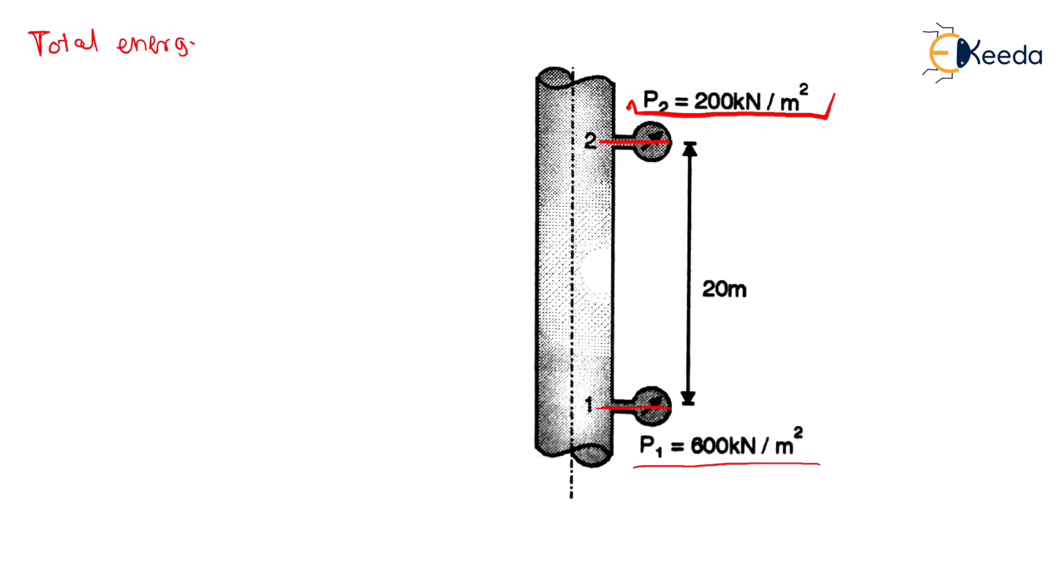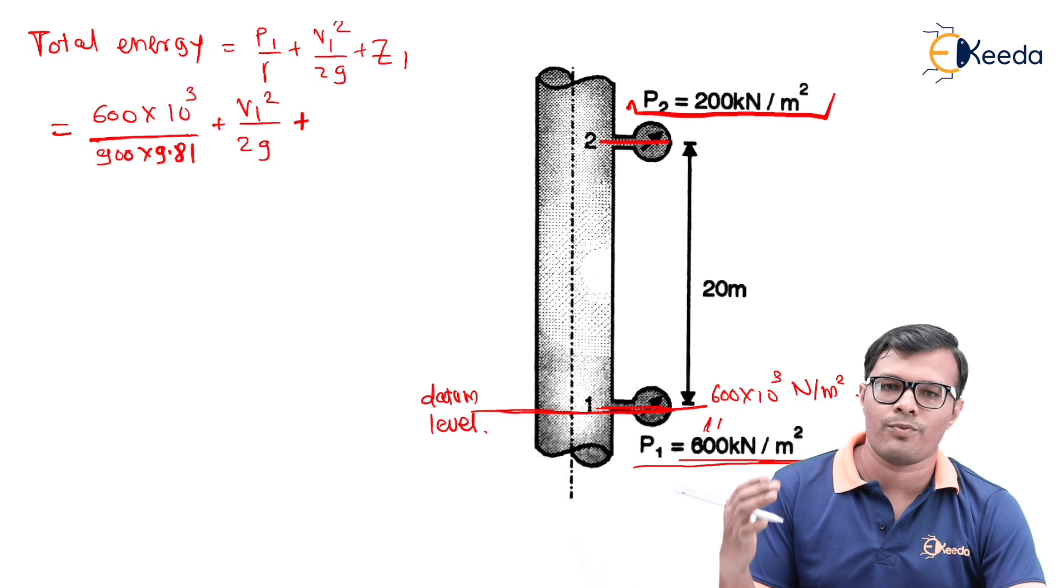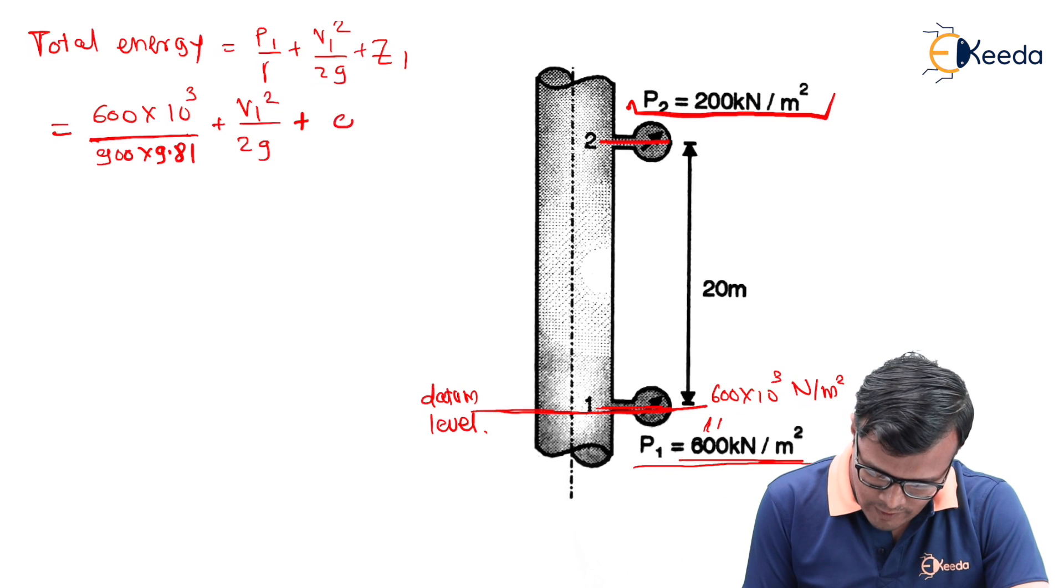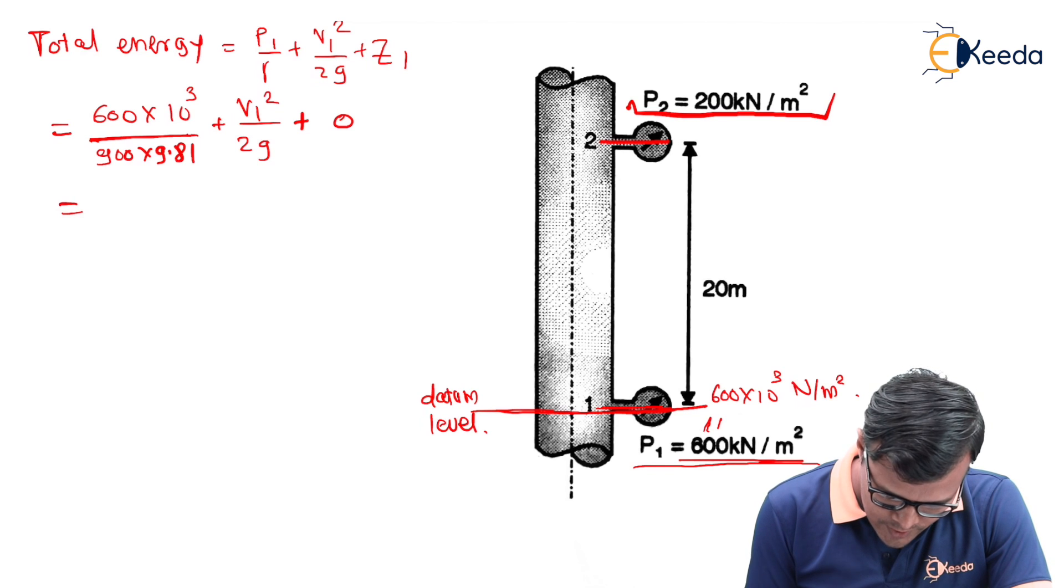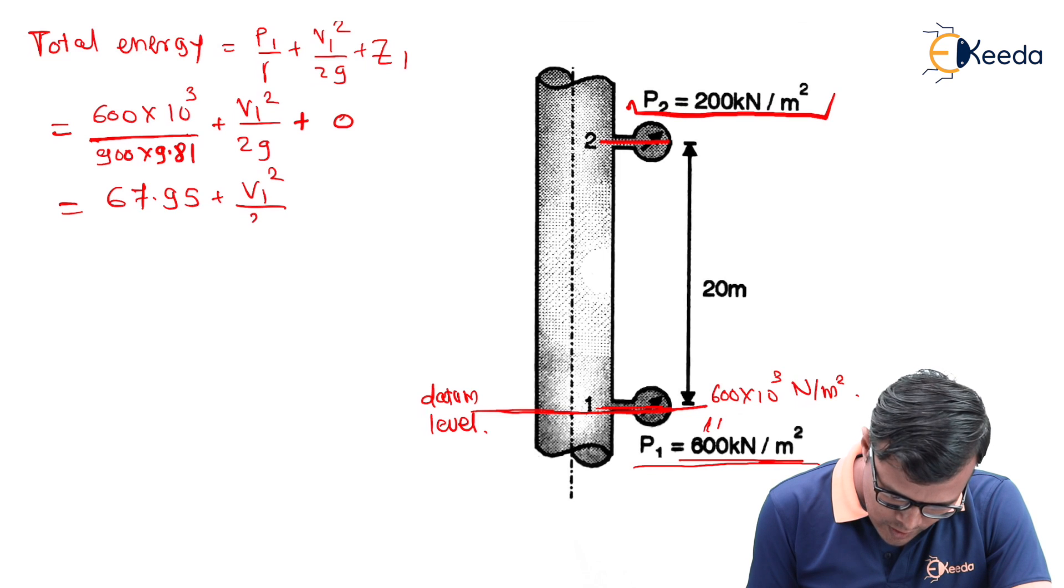Total energy is P1 upon gamma plus V1 square upon 2G plus Z1. That's 600 × 10^3 N per meter square upon gamma, which is 900 × 9.81 (rho × G), plus V1 square upon 2G. We will denote this as the datum level, so the value of Z1 will become 0. It becomes 67.95 plus V1 square upon 2G.